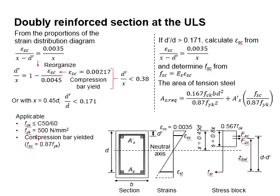The factor of 0.87 is due to the partial factors of safety of 1.15 for the steel. However, if the compressive steel bar has not yielded, the stress within the compression steel bar has not reached to its design stress. With that, we cannot use FSC equals to 0.87 FYK.